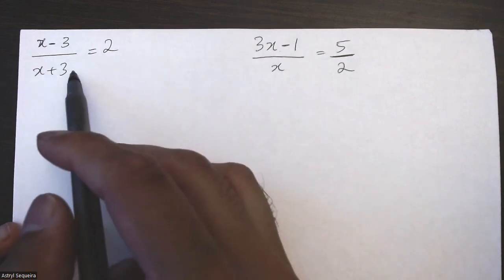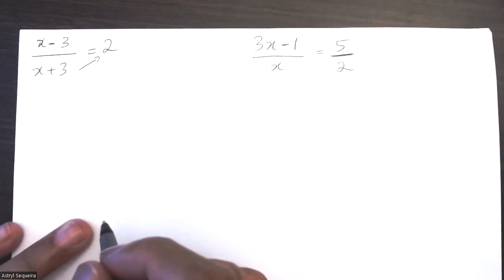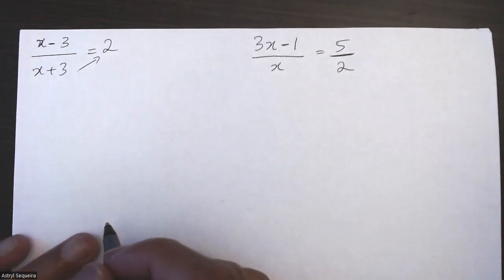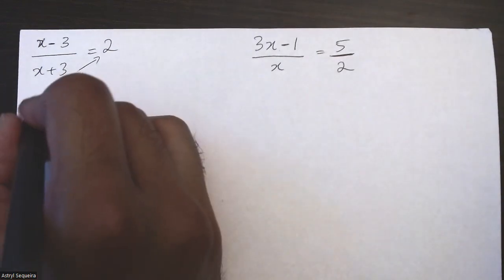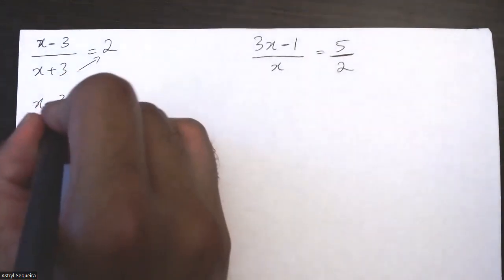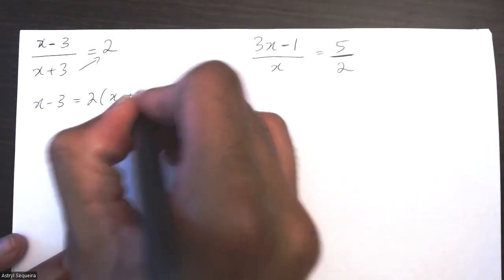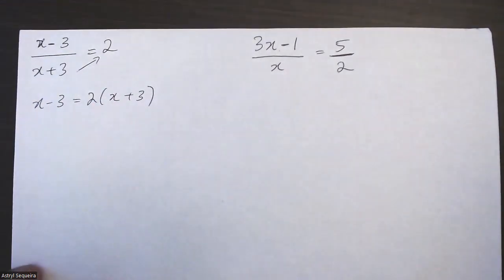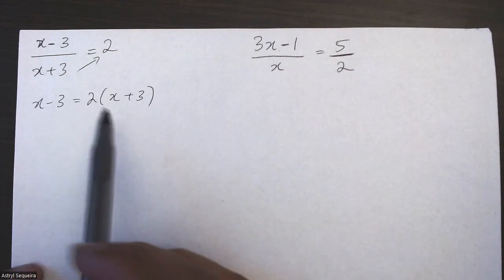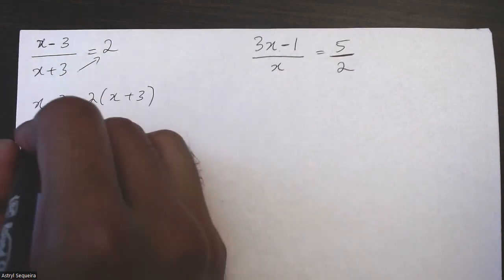For these questions, the first thing I'm going to do is cross multiply. For this first example, I'm going to cross multiply the (x + 3) over, so I have x minus 3 equals 2 times (x + 3). Now we can solve this like a linear equation and multiply the 2 into the bracket.